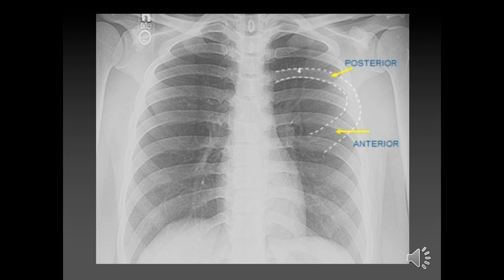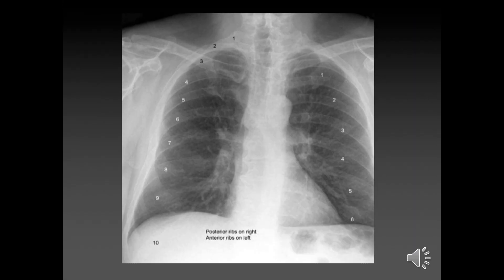Anterior ribs are a little harder to see, and in conditions where bone density isn't quite as good — such as osteopenia or osteoporosis — they're even harder to see. This film of a patient with osteoporosis illustrates exactly that: you can see the posterior ribs, but the anterior ribs are barely visible; you can just about make out the first one.